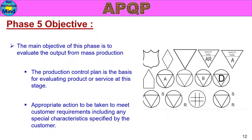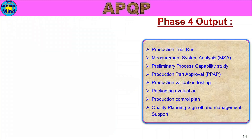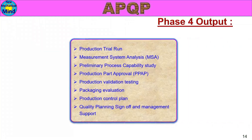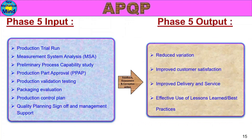In the APQP procedure, the previous phase output becomes the next phase input. Phase 4 output becomes Phase 5 input. From this input, we have Phase 5 activity.